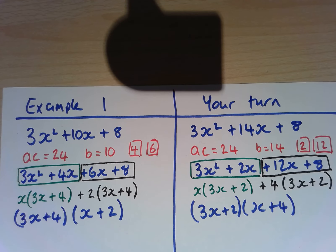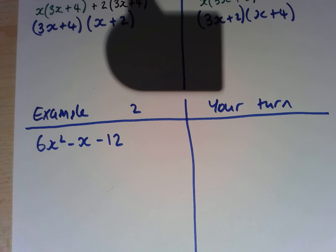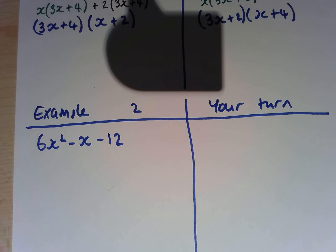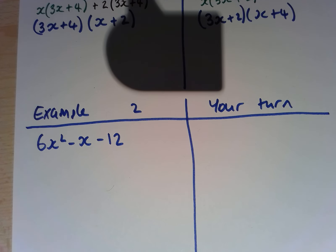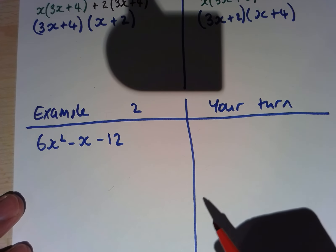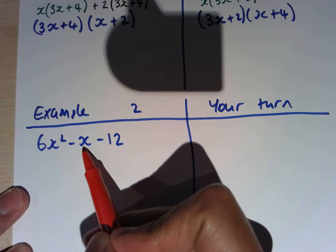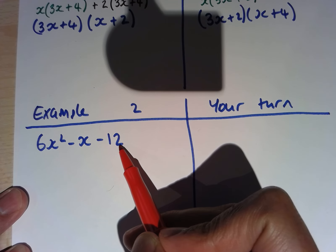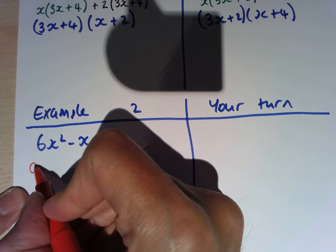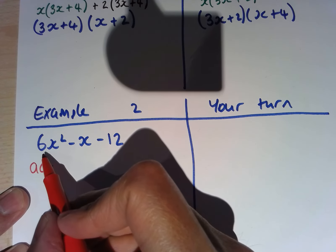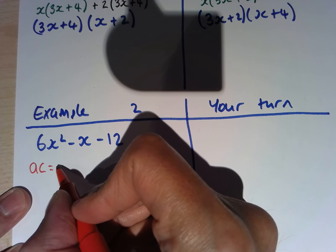I'm now going to show you a different example. We're going to work on Example 2: 6x squared, take away x, take away 12. We're going to use the same method again. My A value is 6, my B value is negative 1, and my C value is negative 12. So AC is going to be equal to 6 times negative 12, which is negative 72.